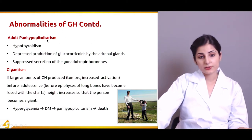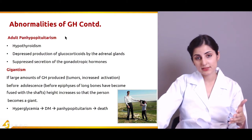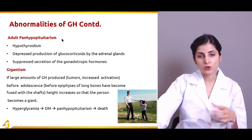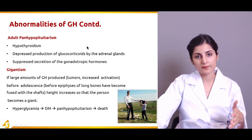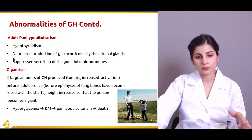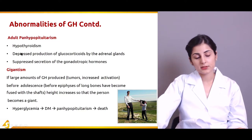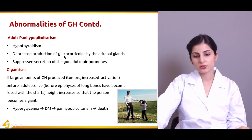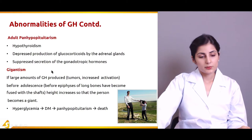Adult panhypopituitarism — a generalized hormonal deficiency occurring in adult life — causes hypothyroidism because of the many hormones influenced by the anterior pituitary. There will be depressed production of glucocorticoids, most probably cortisol. Hypothyroidism occurs because of decreased quantities of TSH, and there is also suppressed secretion of gonadotropic hormones.